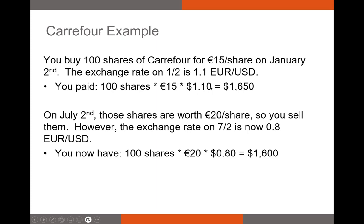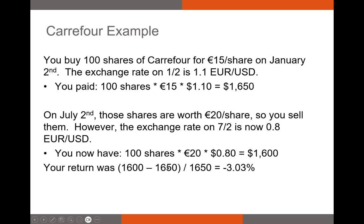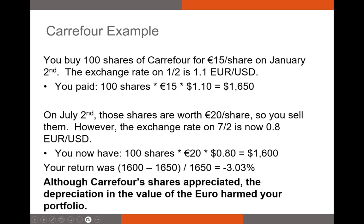When you sell those shares, you're selling for 20 euros instead of the 15 you bought them for. But when you convert your euros back into dollars, you're converting at a lower rate — each euro is now worth only $0.80 per dollar. So when you convert back, you're getting $1,600. Your return was your initial payout of $1,650 subtracted from the $1,600 you cashed out for, divided by $1,650. Your actual return was negative, even though the stock appreciated in value, because exchange rates moved against you. Although Carrefour shares appreciated, the depreciation in the value of the euro harmed your portfolio.